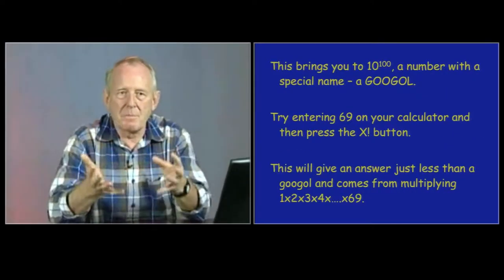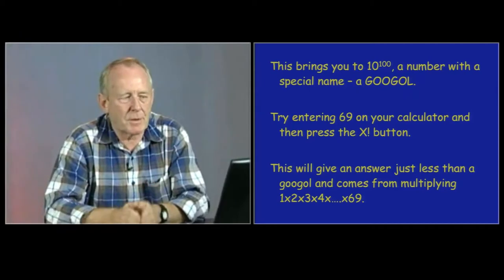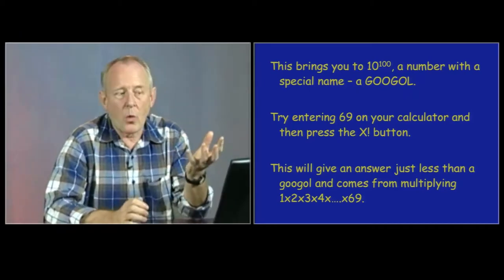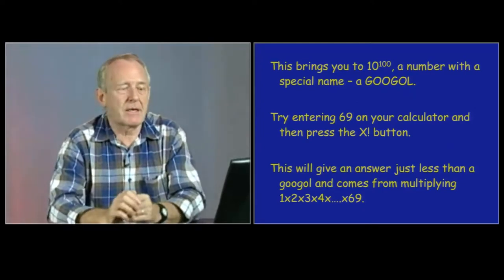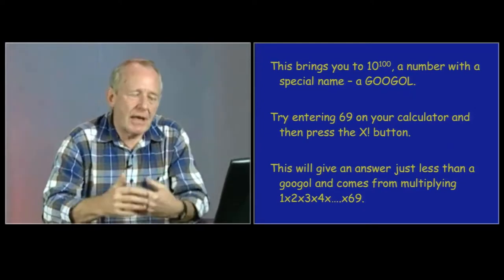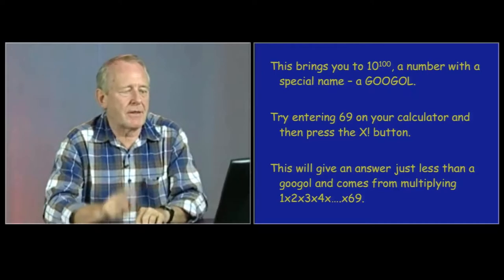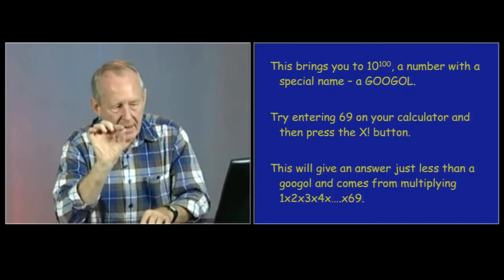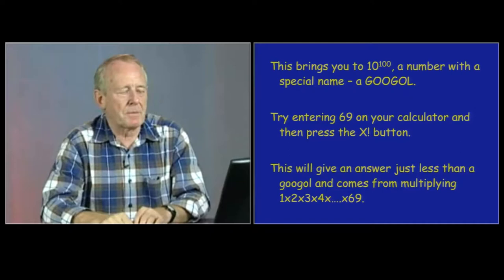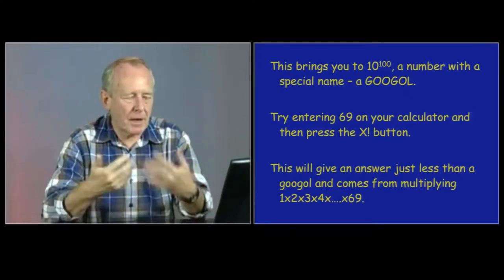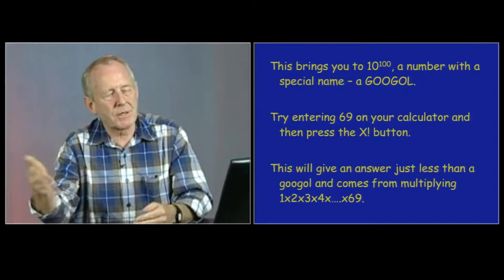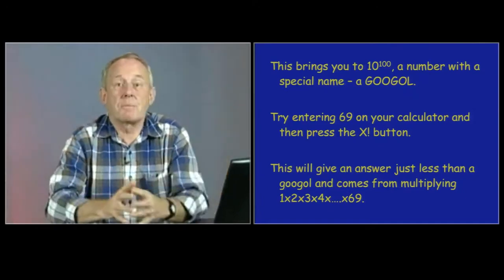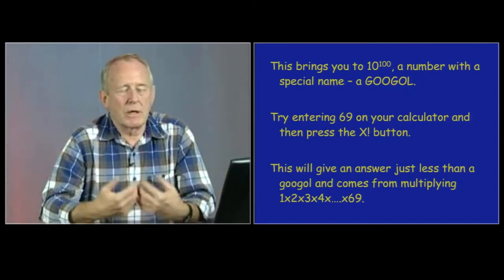So, interestingly, the maximum number that your calculator can just about display is 10 to the power 100. And that has a special name. It's called a googol. You can find a number very close to that. Try entering 69 on your calculator and then pressing the x factorial button, the exclamation mark button. What that does is multiply all the numbers up to 69 by themselves. 1 times 2 times 3 times 4. And that happens to be the biggest number that your calculator will easily display.